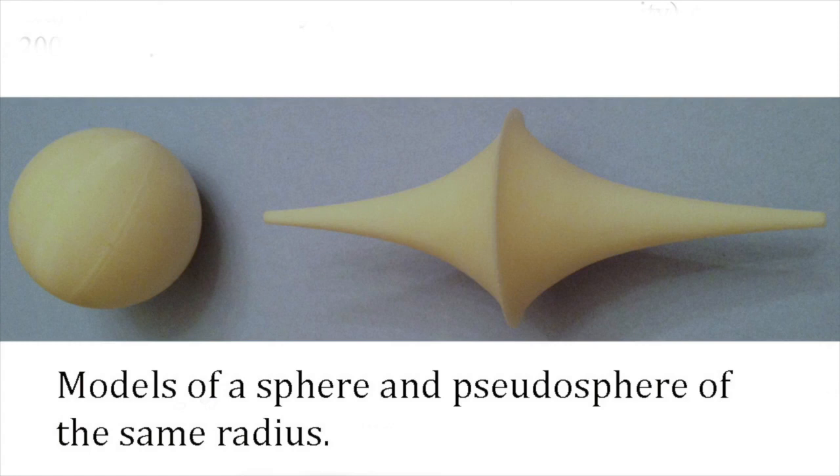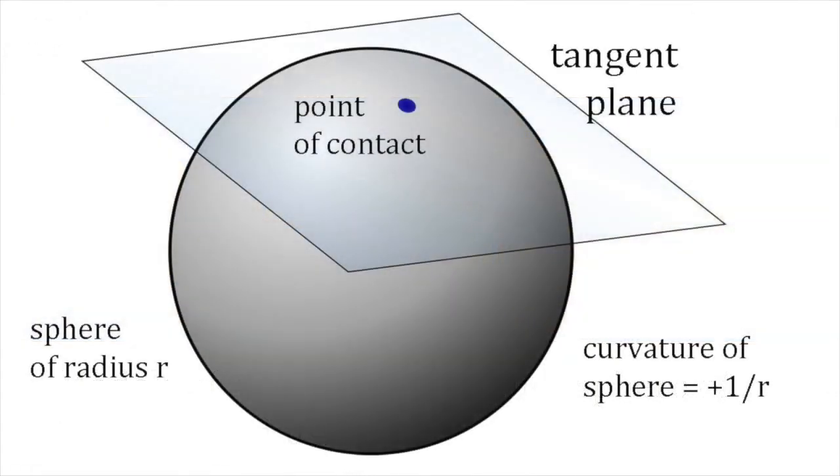A sphere has positive curvature at every point. In other words, its surface always stays on one side of a plane, known as a tangent plane, that just touches the surface at any point.